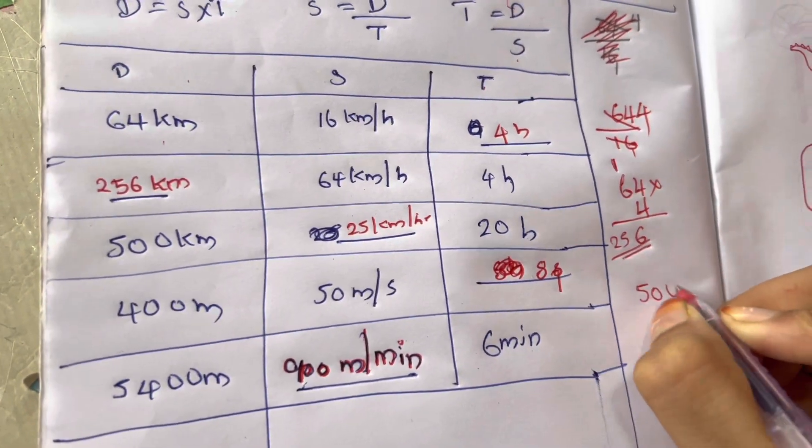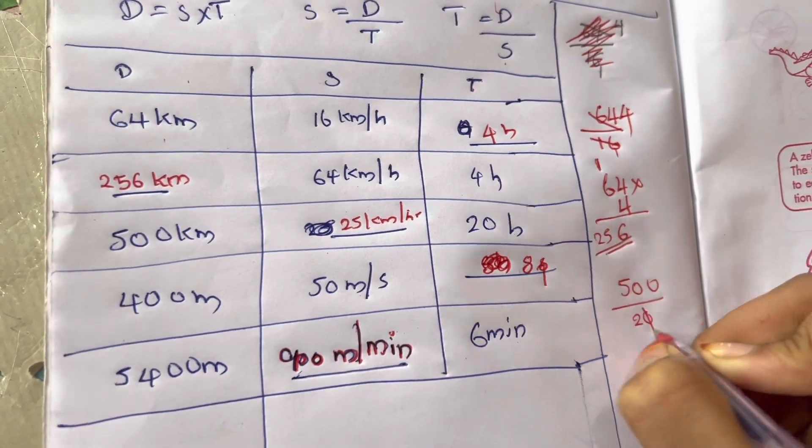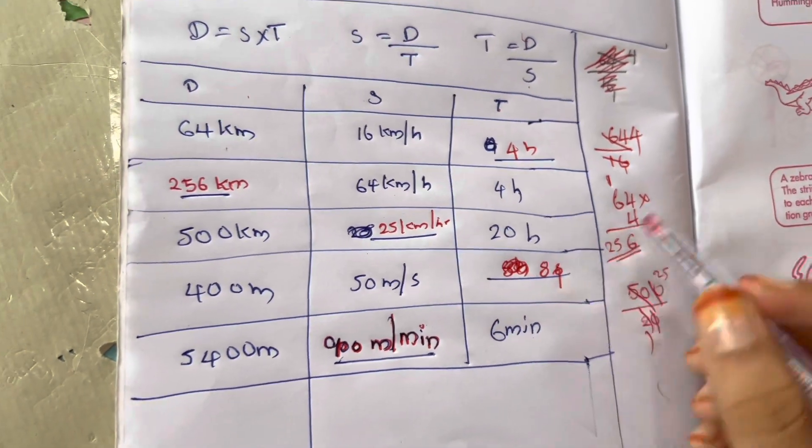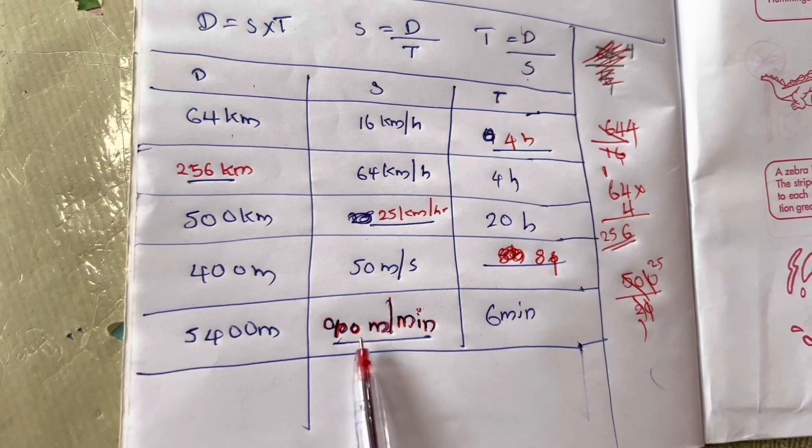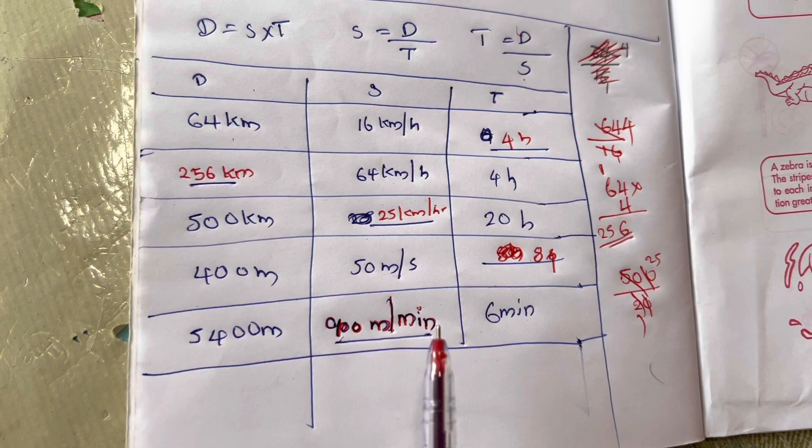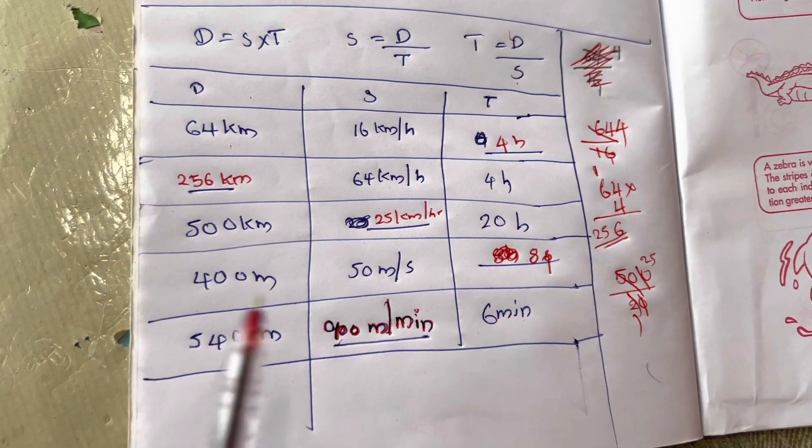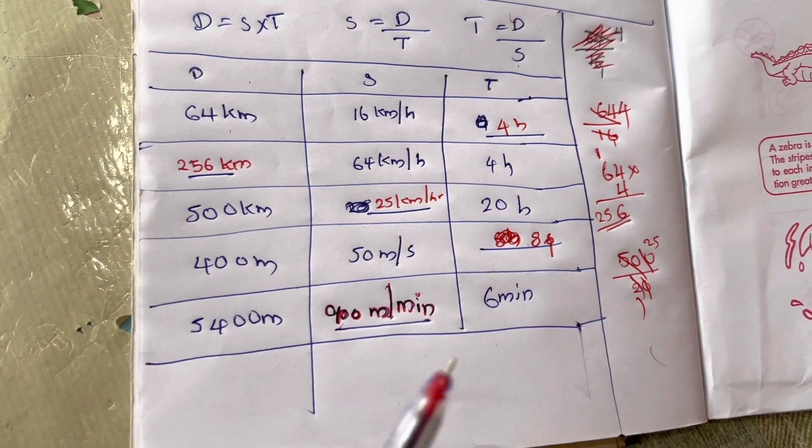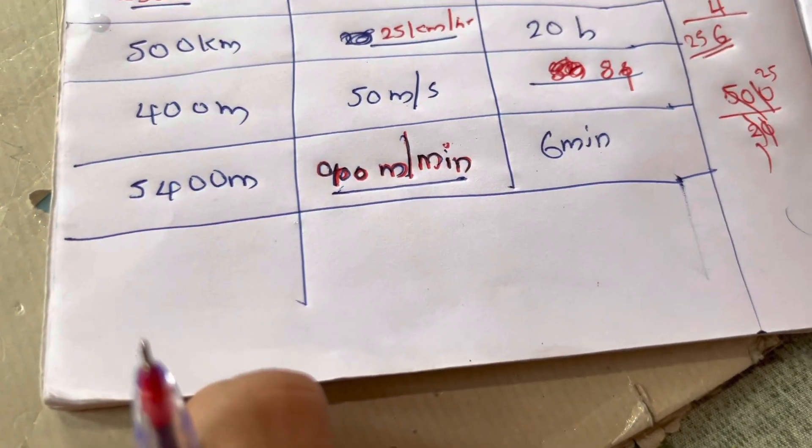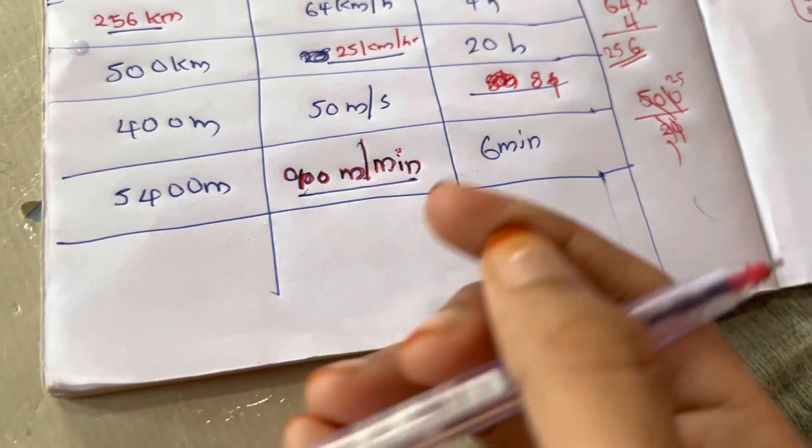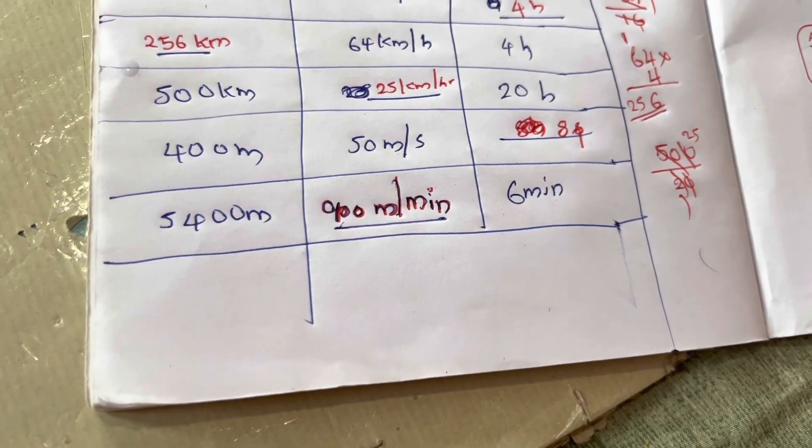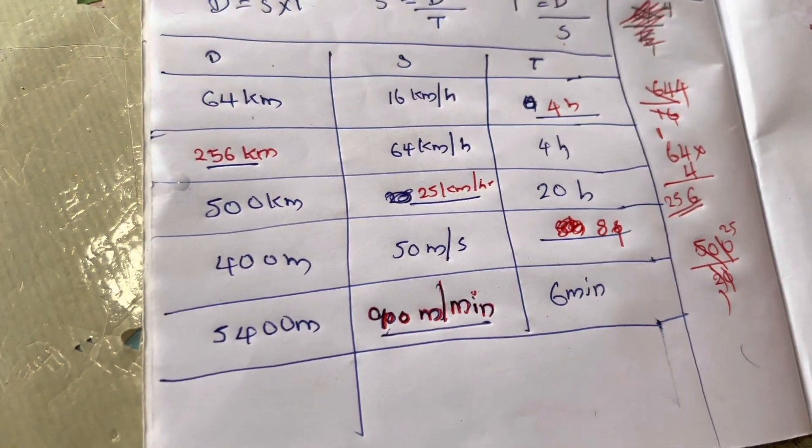To find speed, 500 by 20. Zero zero cancel. Here is 25. By converting speed, 5,400 meters in 6 minutes gives us 900 meters per minute.